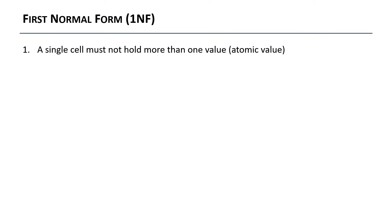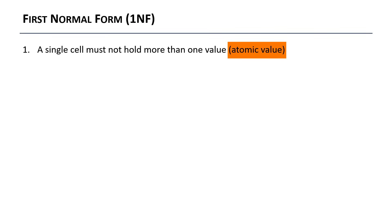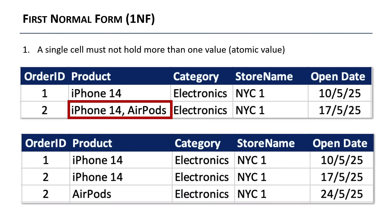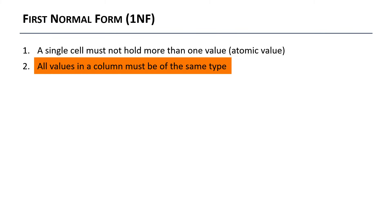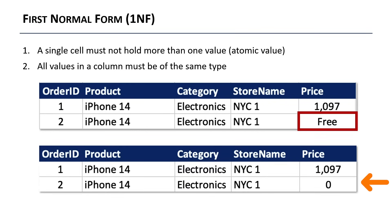First normal form says that a single cell must not hold more than one value — technically known as an atomic value. In this example, under product we've got iPhone 14 and AirPods in the same cell, which doesn't fit the criteria. Instead, you normalize the data by creating two separate rows. The second part of 1NF says all data in a column must be of the same data type. For the price column, we have an integer 1097 and a text string 'free' — that doesn't work, so you'd change 'free' to 0.